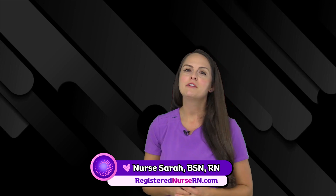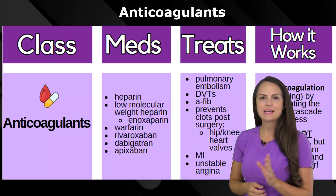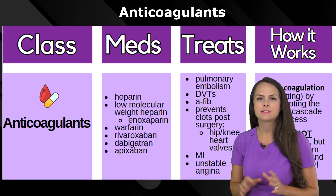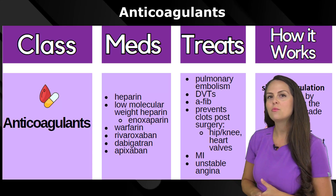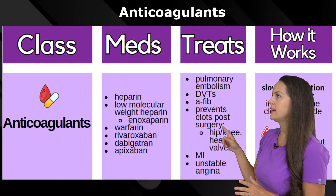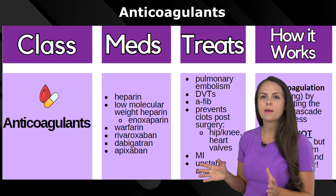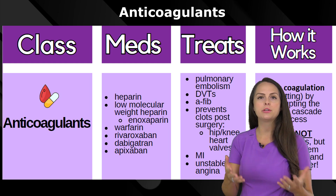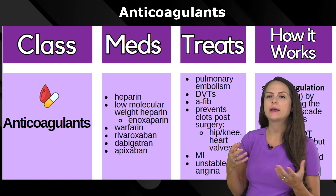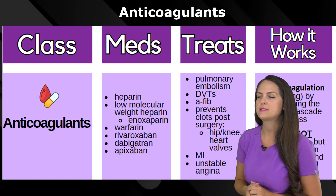Let's quickly do a pharm review over anticoagulants. The prefix anti means against, so we are working against coagulation — that's just a fancy way of talking about the body's ability to form a clot. We're going to affect that process.